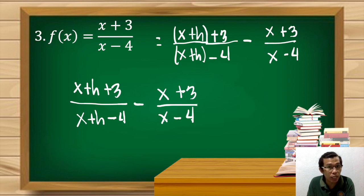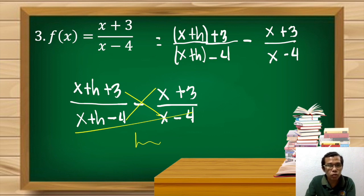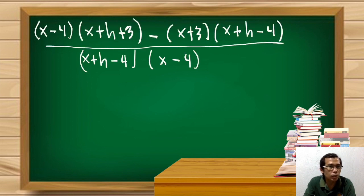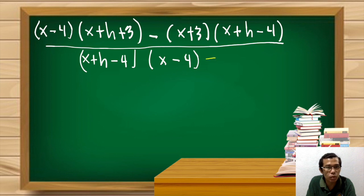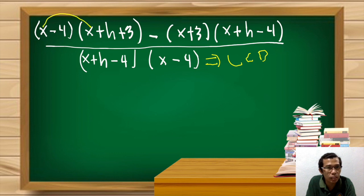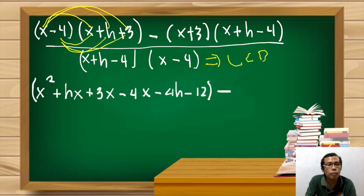To simplify, we cross-multiply using the LCD. Remember we still divide by h. Multiplying gives us: (x−4)(x+h+3) minus (x+3)(x+h−4), all over (x+h−4)(x−4). Distributing the first product gives x² + hx + 3x − 4x − 4h − 12.